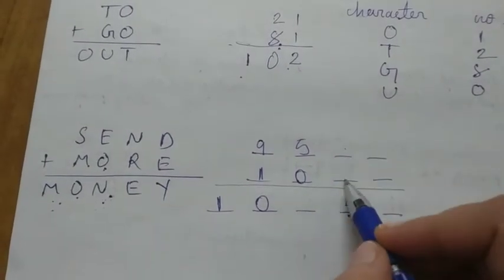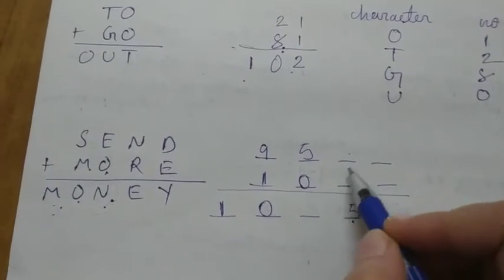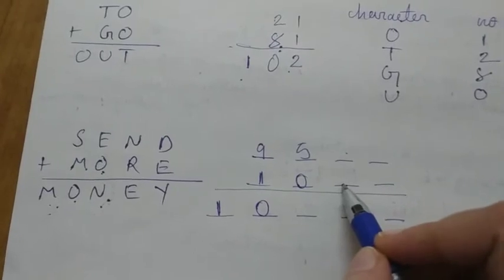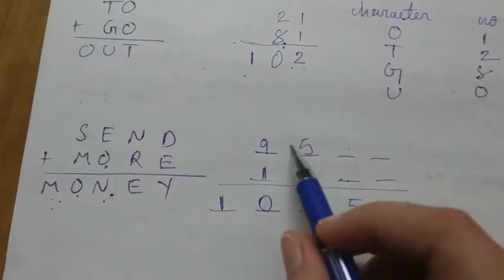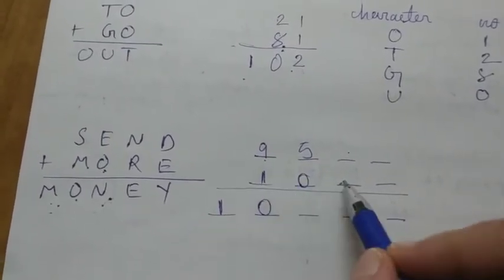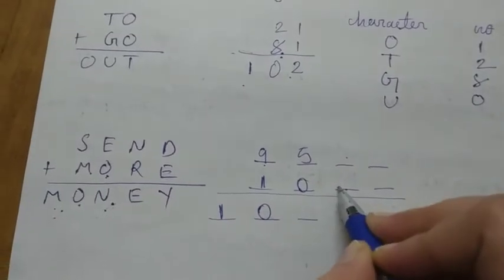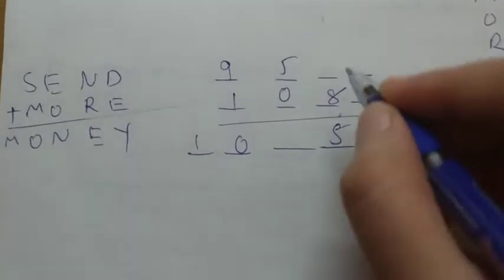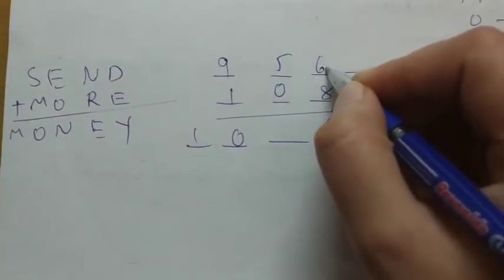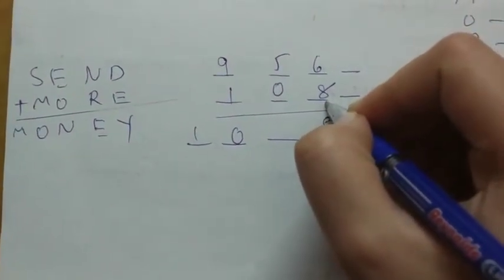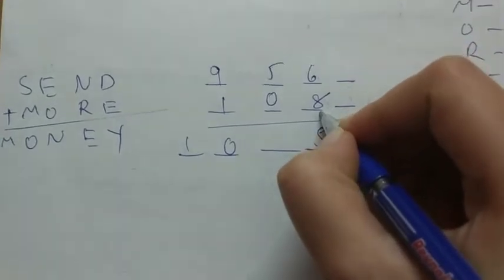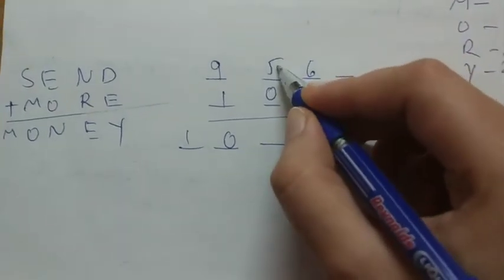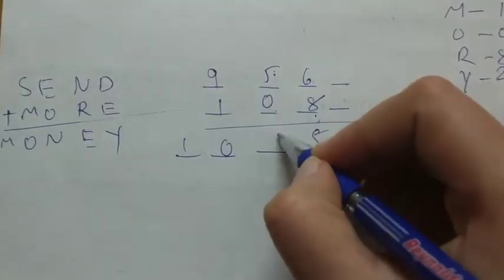Now N plus R - we need to select a value that will generate a carry. 9 we already used for S equals 9. So here I am assigning R equals 8. If I add 6 to 8, it will be 14, a carry will be generated, and this will become 5 plus 1 equals 6.